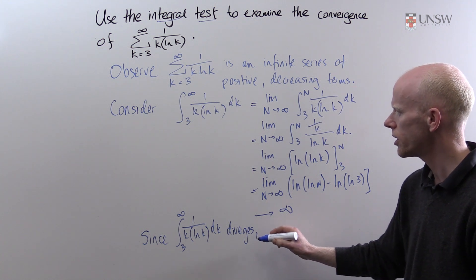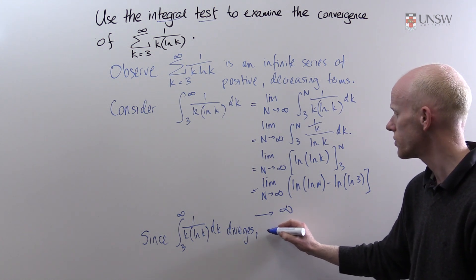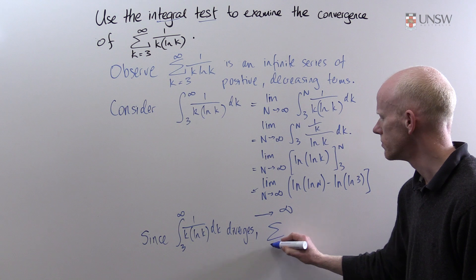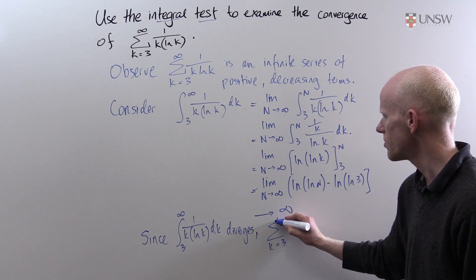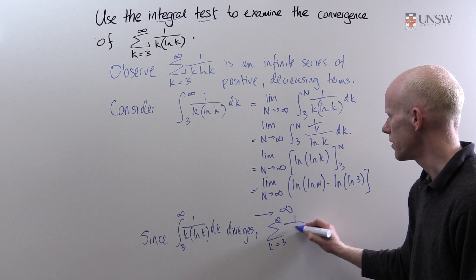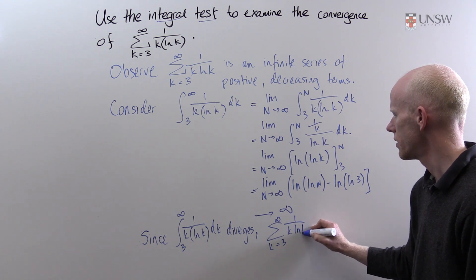Since the integral from 3 to infinity of 1 over k log k diverges then the sum from k equals 3 to infinity of 1 over k log k diverges.